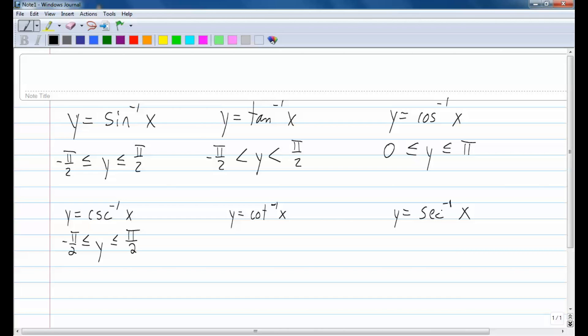Inverse secant is very similar to its reciprocal inverse cosine as well. Again, there is one place between zero and pi where secant would be undefined.